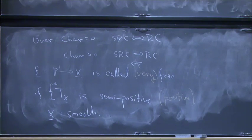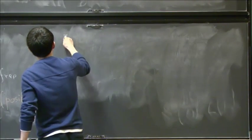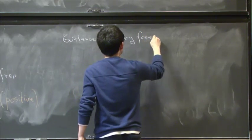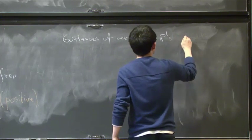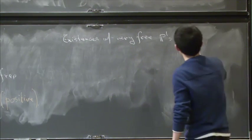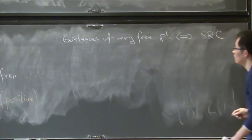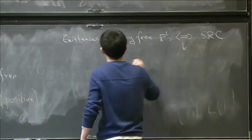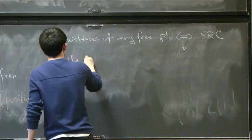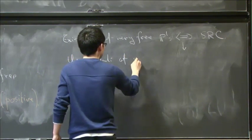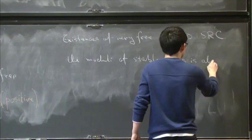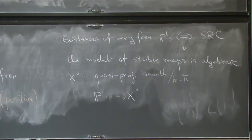So here I need to assume that X is smooth. So the nice thing about very free curves and free curves is existence of very free curves implies, in fact is equivalent to SRC. I'm only working with quasi-project or project case.